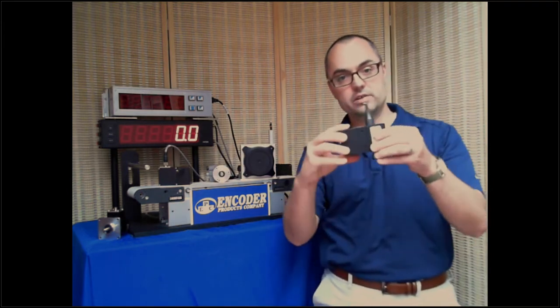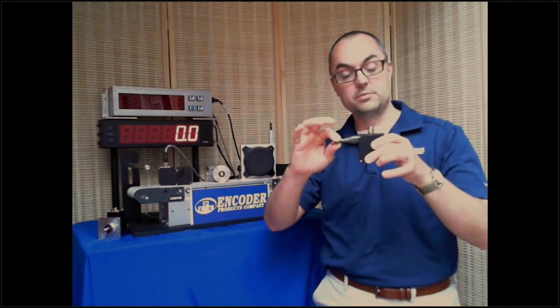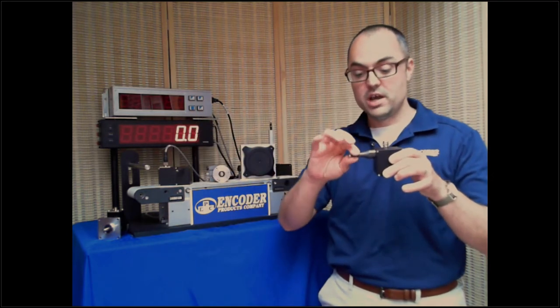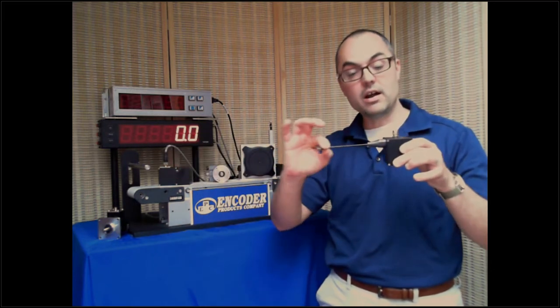So what a draw wire encoder does, when I pull this cable, it rotates the encoder, in this case being incremental, creating those ticks, those pulses. So I'm able to count those ticks and figure out how far in or out my cable is.